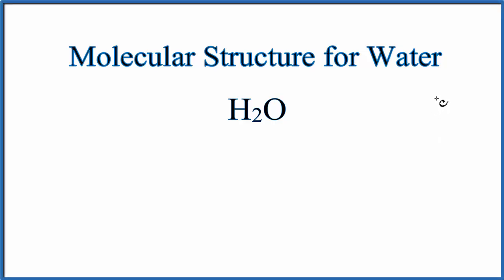There are a number of ways we can think about the molecular structure for water. First off, we could just look at the chemical formula and see that we have two hydrogens and one oxygen. So we could draw it like this. That would be a good start to drawing the molecular structure for water.